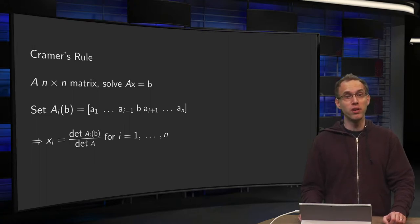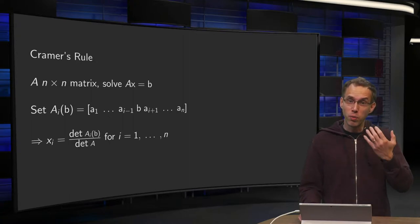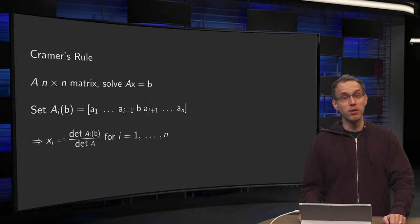First of all, Cramer's rule allows you to determine the unknowns one by one. So if you need only one of the unknowns, Cramer will be fast.